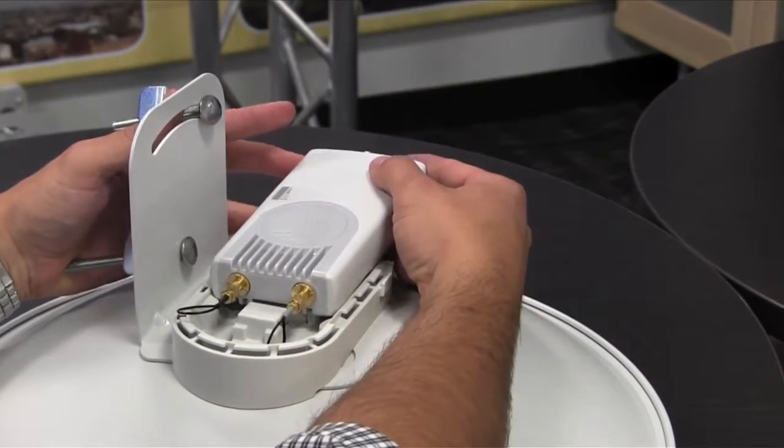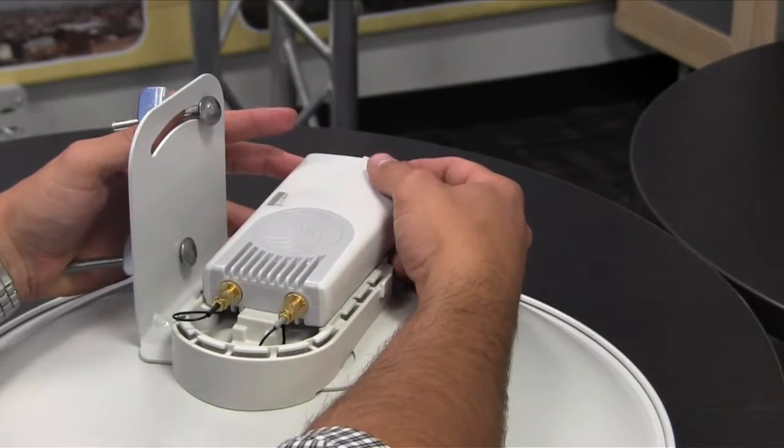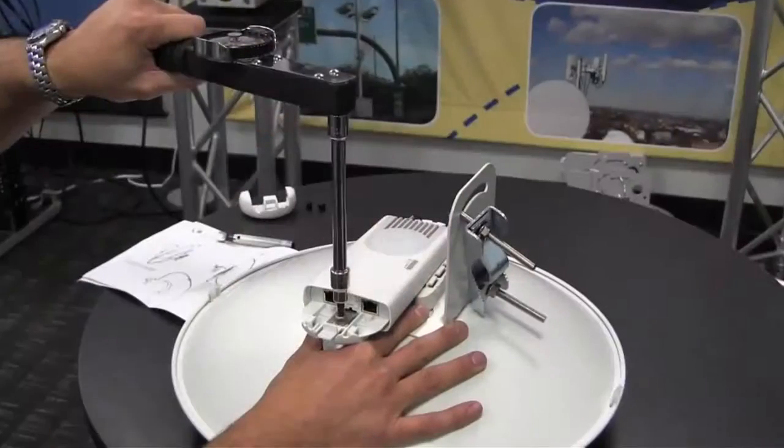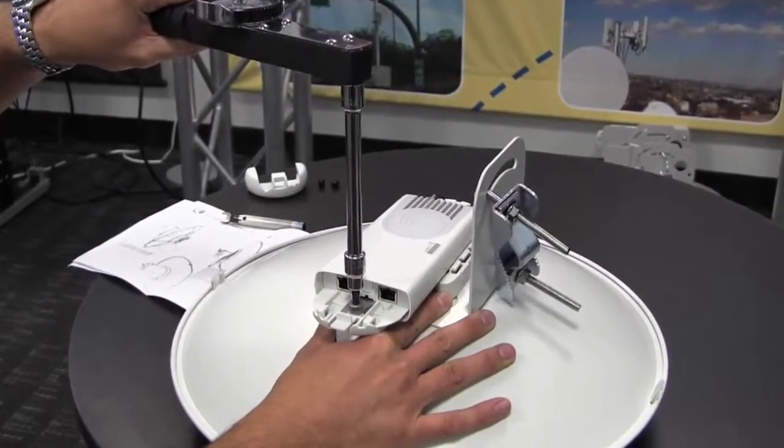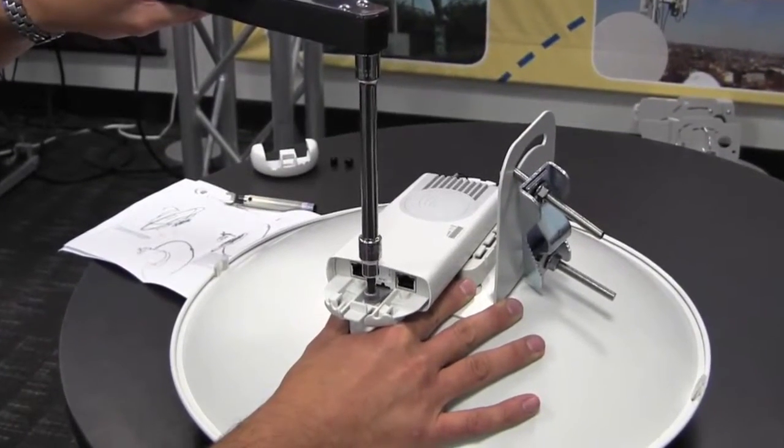Slide the radio into the slot, careful not to crimp the RF cables. Tighten the radio hold-down nut to 6 Nm using a 5 mm Allen wrench.